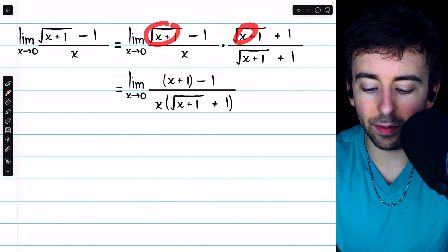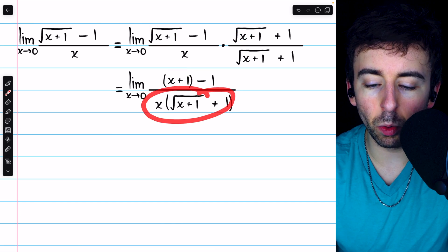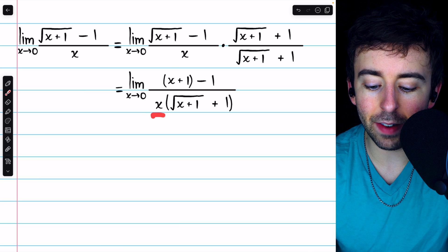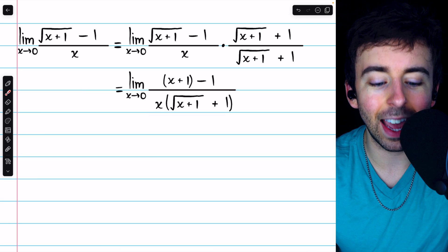In the numerator, we just have that x plus 1, and then the minus 1. In the denominator, we're not going to distribute, because if we leave this in its factored form, it will be easier for us to see the cancellation.